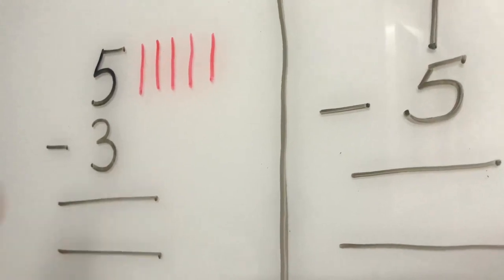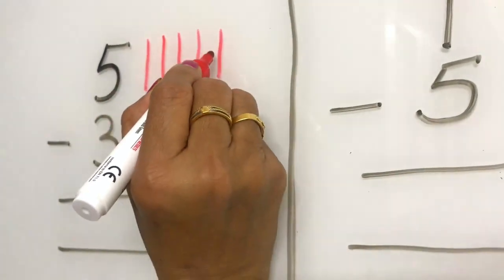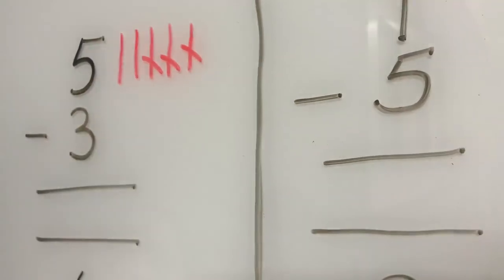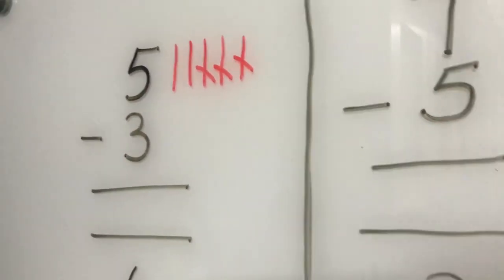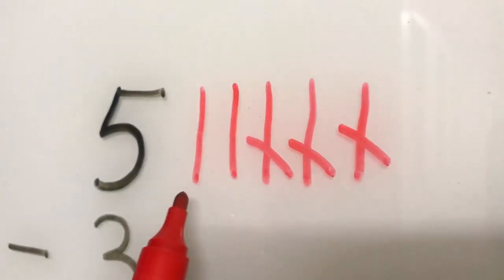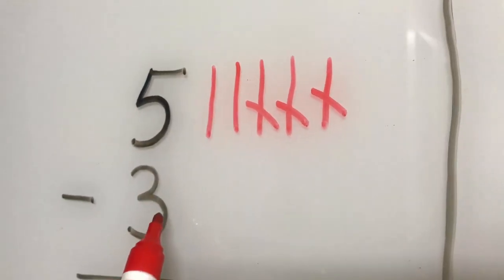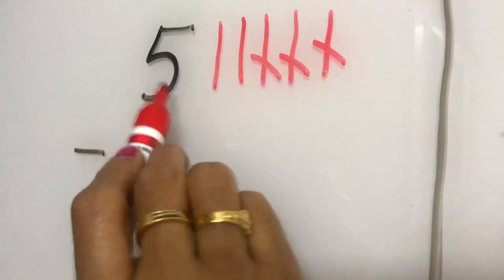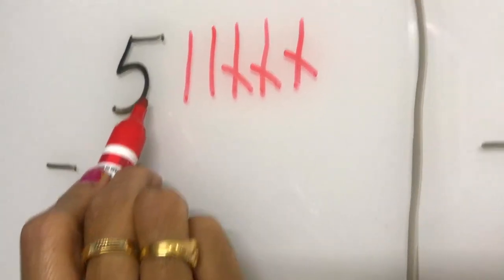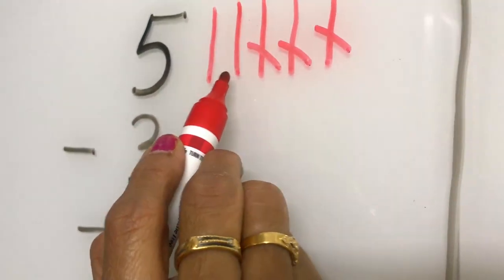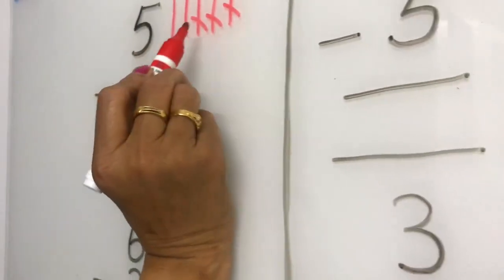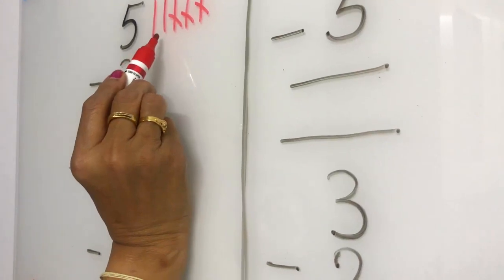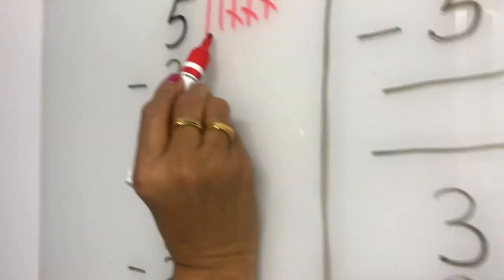We take out three lines — one, two, three. How many remaining lines are there? Two. One, two. When three is subtracted from five, three is subtracted from five, the answer is two. We subtracted three from five; remaining lines are two. Answer is two.